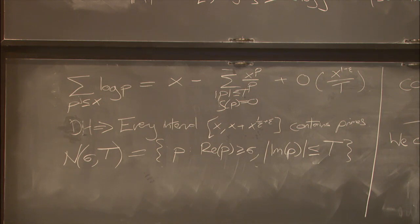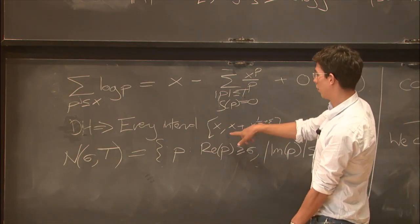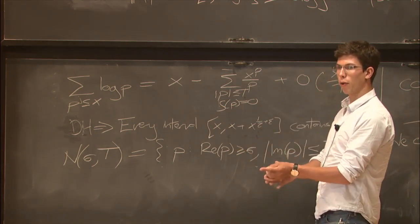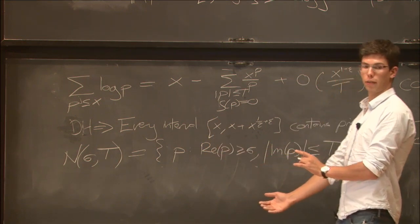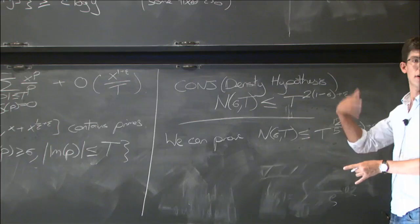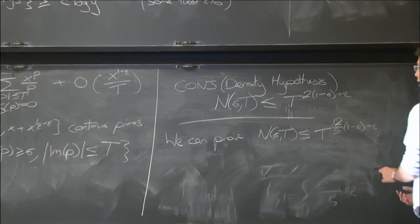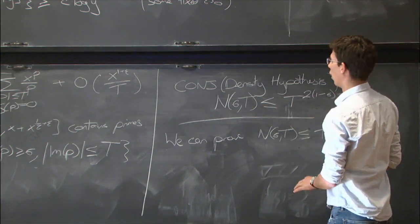So the summary of all of this is that you can get nice results that can be, in some cases, as strong as what you would know under the Riemann hypothesis if you have a good understanding of the horizontal distribution of the zeros of the Riemann zeta function. Even if the Riemann hypothesis is potentially not true, you can consider this alternative universe where there might be counterexamples.